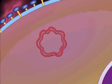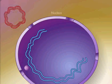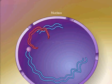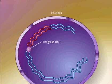The resulting circular DNA is then moved to the nucleus and inserted into the host cell chromosome by the viral integrase (IN) enzyme. The integrated viral DNA is now referred to as proviral DNA.